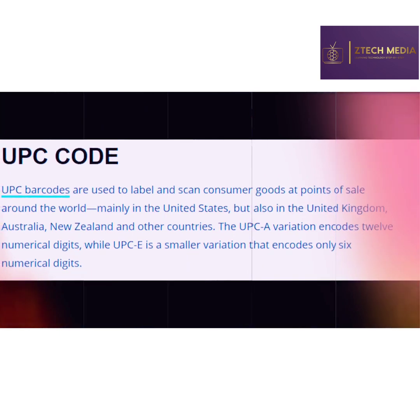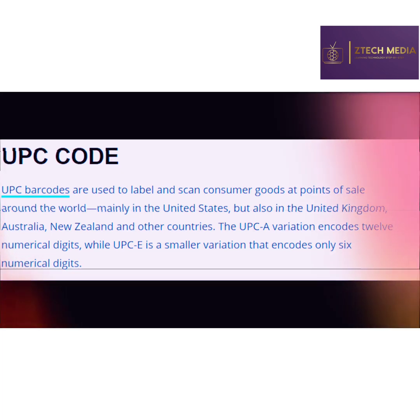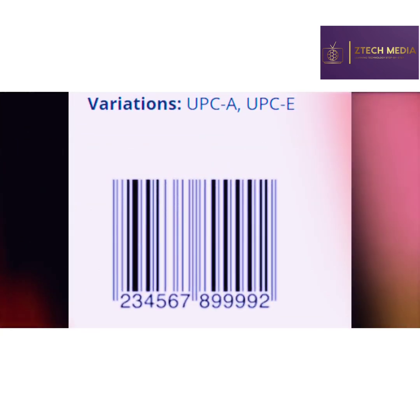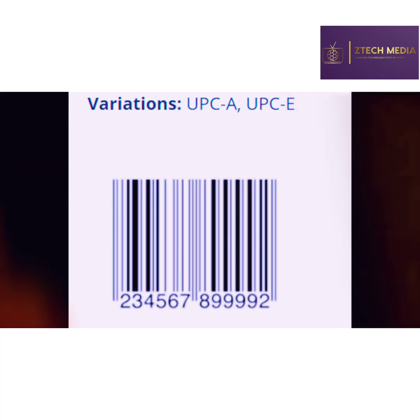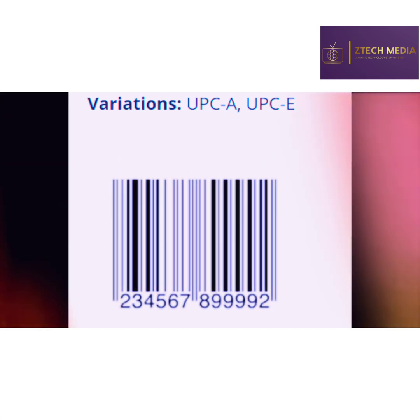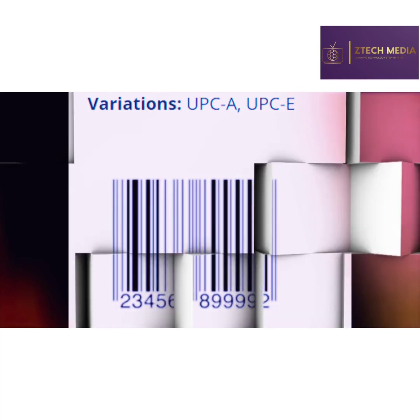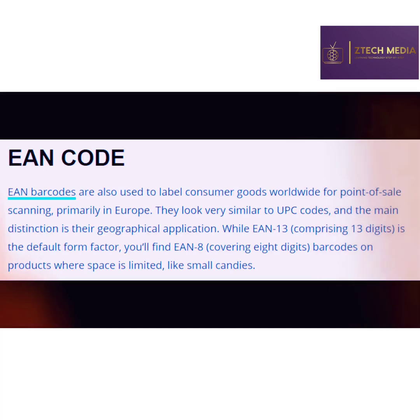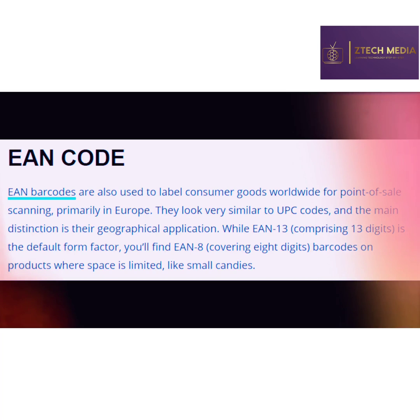There are different kinds of barcodes. As you can see on the screen, this one is a UPC code, which is widely used at POS for consumer goods sales. In UPC there are two types: UPC-A and UPC-E. Up next we have EAN codes, which are also used to label consumer goods worldwide at POS, but this is primarily used in Europe.